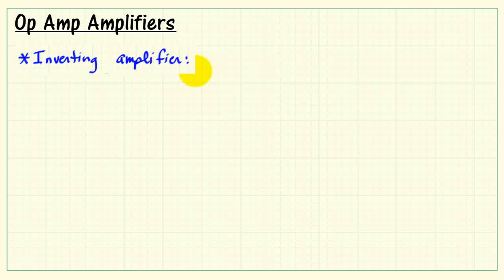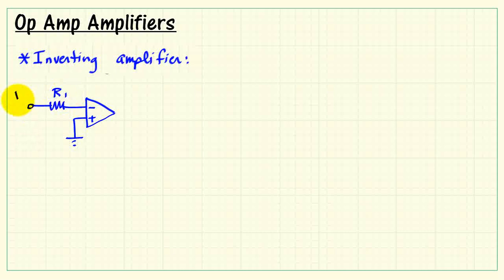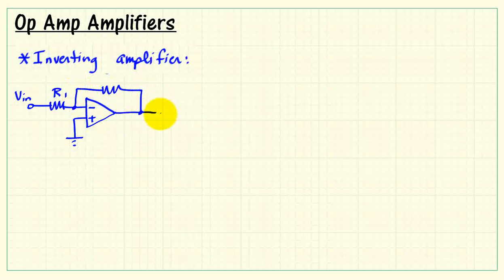Let's consider two popular amplifiers based on the op-amp. I'll begin with the style referred to as the inverting amplifier. I begin with the op-amp symbol shown here. I connect the non-inverting terminal to ground, then use a resistor to connect the input signal, called VIN, to the inverting terminal. I then have a resistor that serves as feedback from the output back to the inverting terminal.